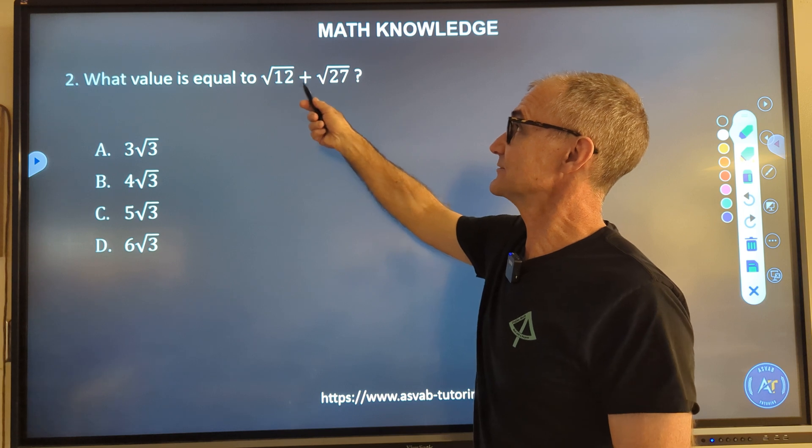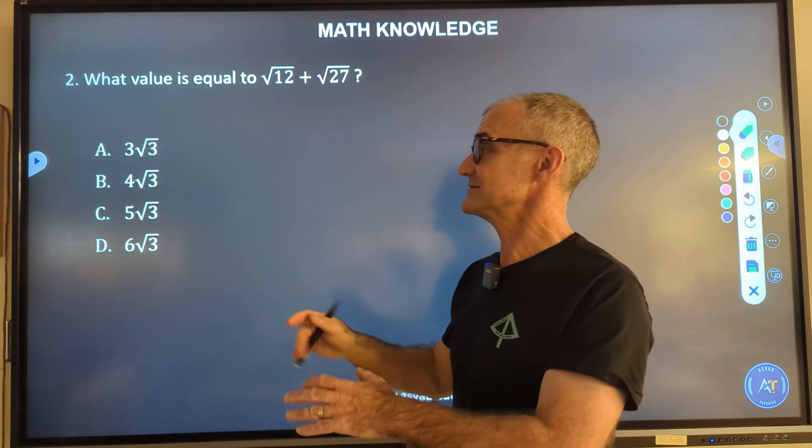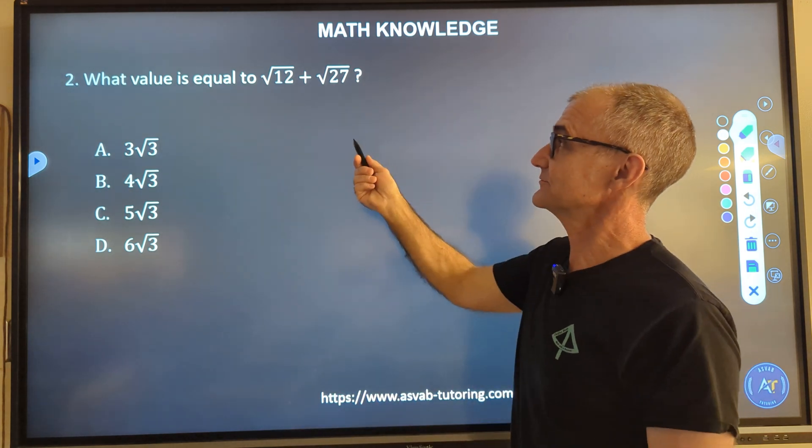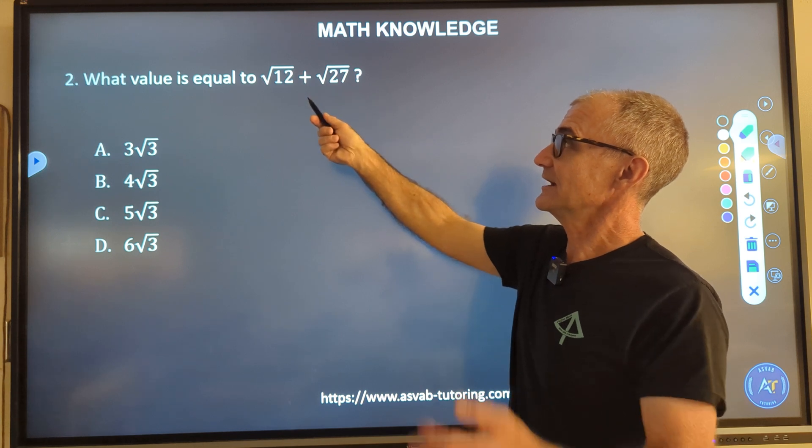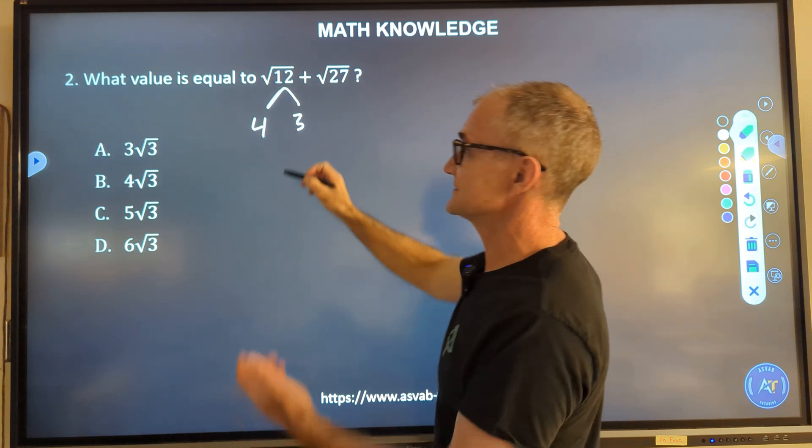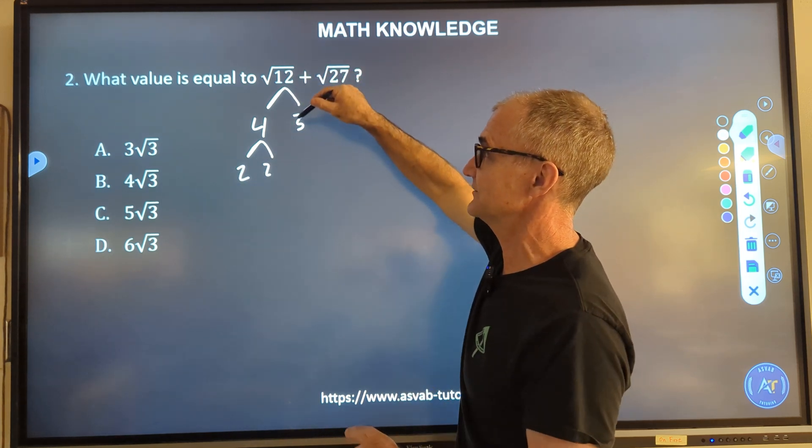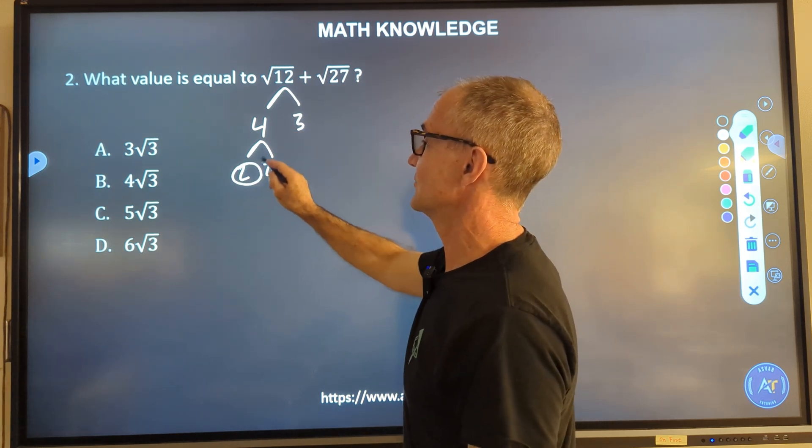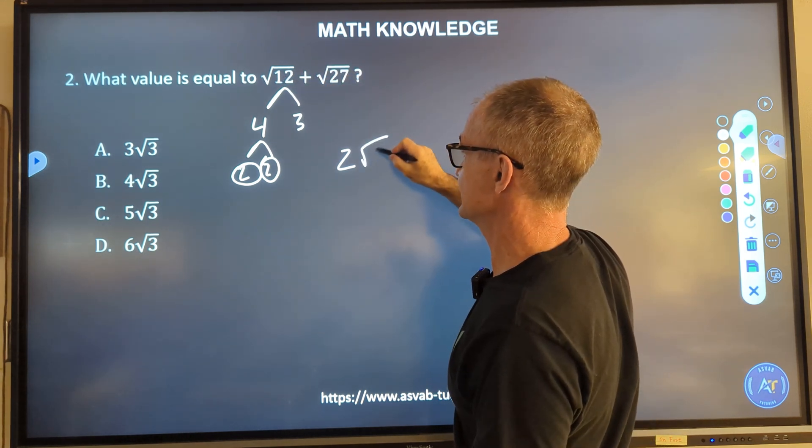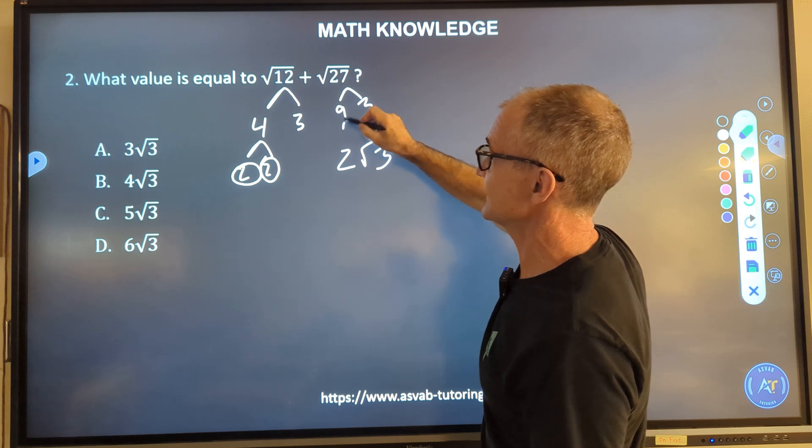Number two, what is the value of radical twelve plus radical twenty-seven? I look at my answers and I can see there are no decimal approximations, meaning I have to simplify and leave an exact value answer. These are all root threes in the radicals, so that's where I'm trying to go. In these square roots, I try and figure out the factors of twelve so I can find a pair. Factors of twelve are four and three. Four is a pair of twos and a three, so I could get twelve with two times two times three.